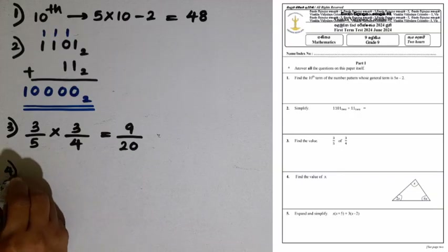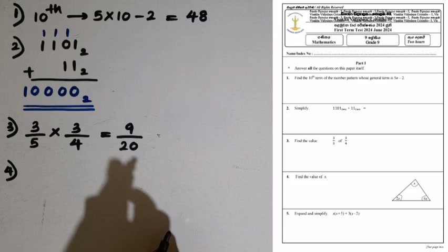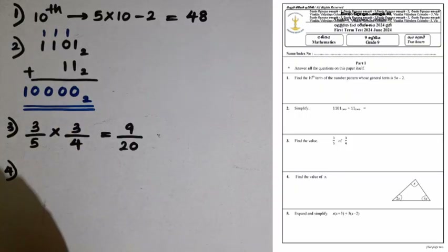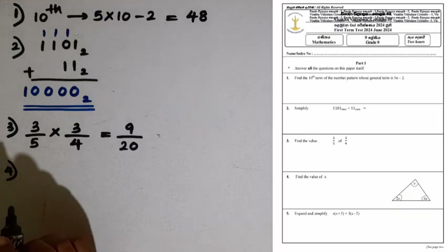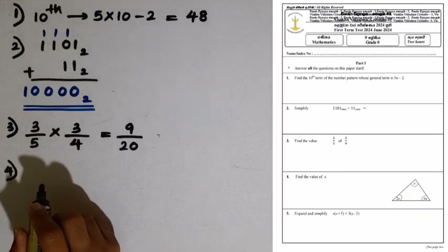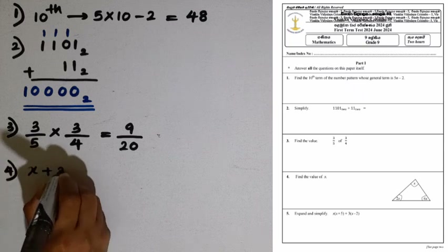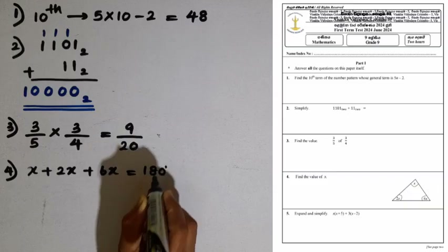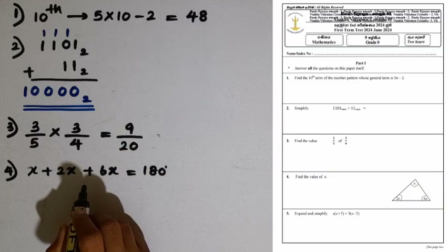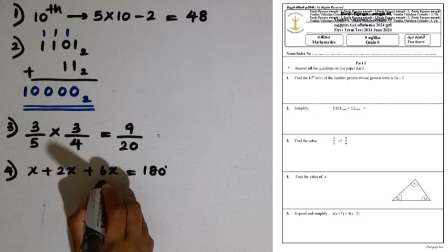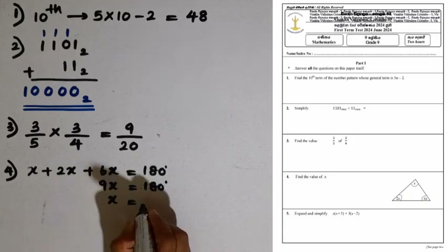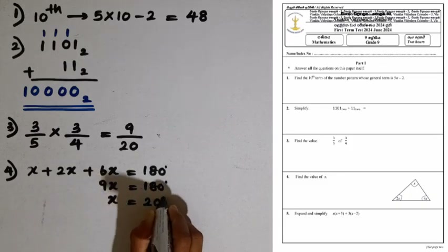Question number 4: find the value of x. The three interior angles of the triangle are given as x, 2x, and 6x. As the sum of the interior angles of a triangle is 180 degrees, we write the equation: x plus 2x plus 6x equals 180. The addition is 9x, so 9x equals 180, giving x equals 180 divided by 9, which is 20 degrees.